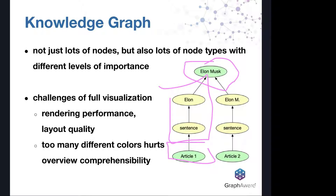One challenge in visualizing a graph with many node types is that we can display all nodes but should collapse paths into something more comprehensible. Another challenge is that many node types can lead to many different colors or icons. In the visualization community, the convention is to use a maximum of five to seven colors — absolute maximum ten — because beyond that, colors start to merge and become difficult to differentiate. So we need to filter which nodes are displayed.